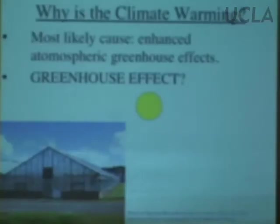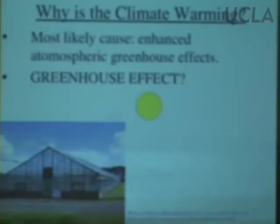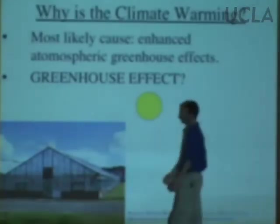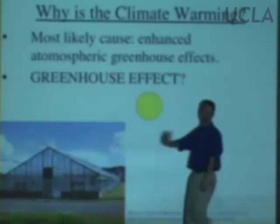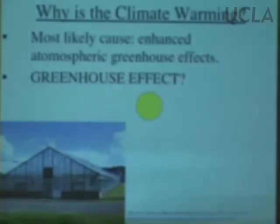I'm going to focus on what we think is the best, most likely candidate for what's causing the recent warming, and that is an enhanced atmospheric greenhouse effect. Hopefully most of you have heard this term. Let's actually figure out what a greenhouse does before we discuss what the greenhouse effect is. Here's a greenhouse — this is an English greenhouse. They can be made out of glass or plastic; that doesn't really matter very much.